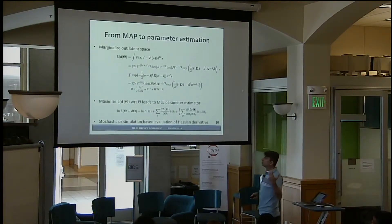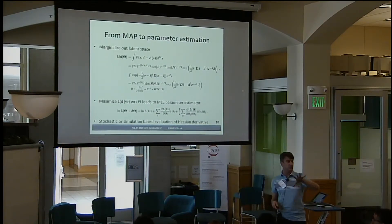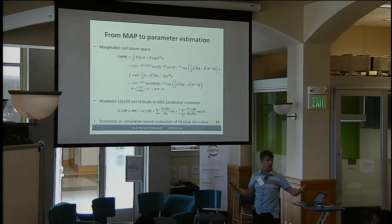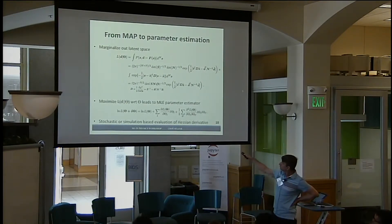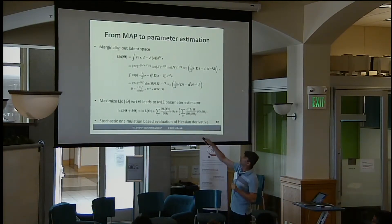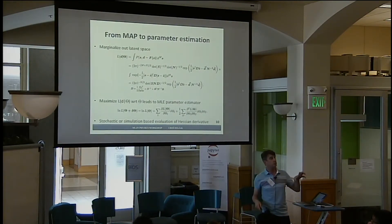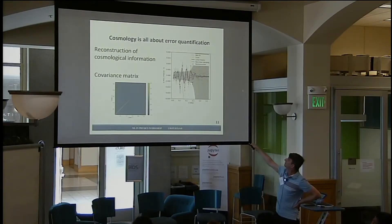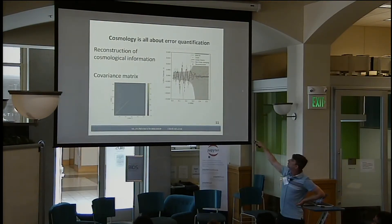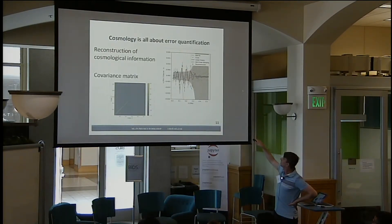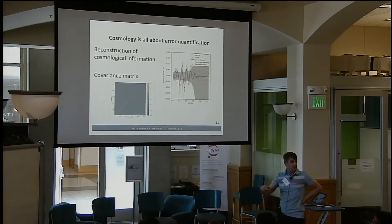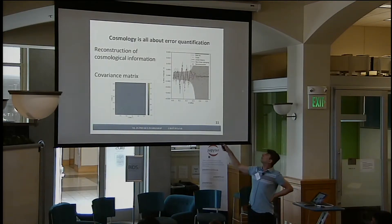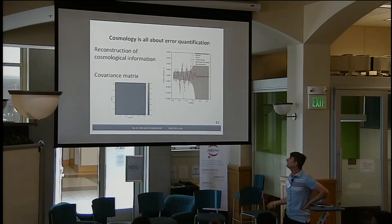What we really care about is the cosmological parameters. We need to marginalize out the latent space of initial density modes — literally doing a million-dimensional integral, which we assume to be Gaussian. That leaves us with the likelihood of the data given the cosmological parameters only. We then try to maximize this via a Taylor expansion to find the peak and the covariance matrix around it. Here's an example in terms of the power spectrum, which carries a lot of cosmological information. Cosmology is all about error quantification — we spend a lot more effort on getting the errors than on getting the actual answer.